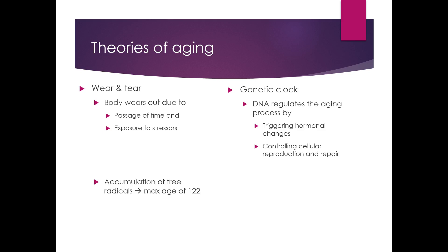According to the wear and tear theory, because of the accumulation of what are called free radicals — the waste products from processing oxygen — because those accumulate in your body, the maximum age that humans could probably live is about 122 years. Under the genetic clock theory, because your cells can only reproduce themselves about 60 times before they lose their effectiveness, your max age is also about 122. So regardless of which theory we follow, we still have the same basic maximum lifespan possible.